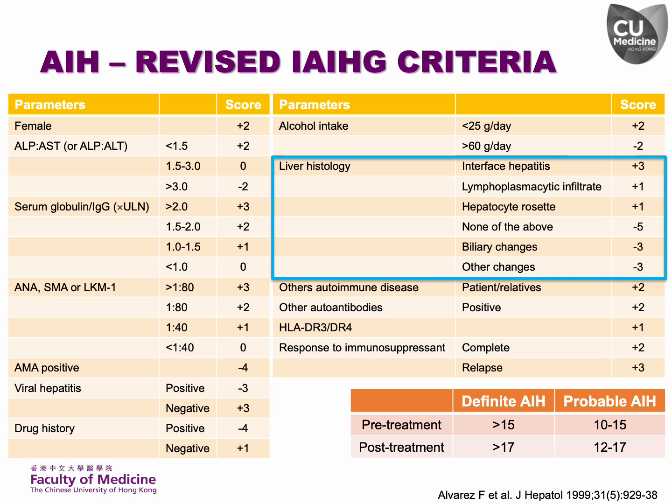Key histological features include interface hepatitis, lymphoplasmacytic infiltrate, hepatocyte rosettes, and the absence of biliary changes. While this revised scoring system is an excellent tool for research purposes, its complexity and comprehensiveness make it less practical for daily clinical use.